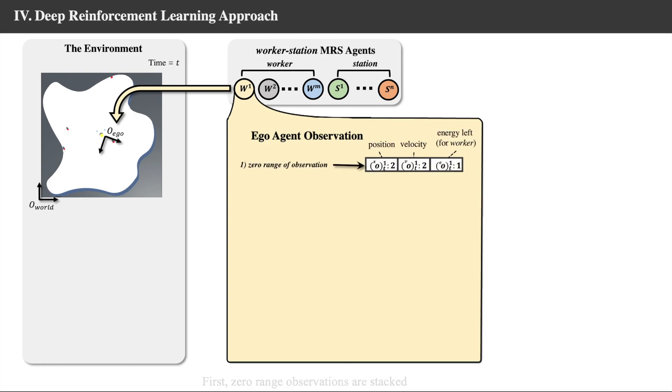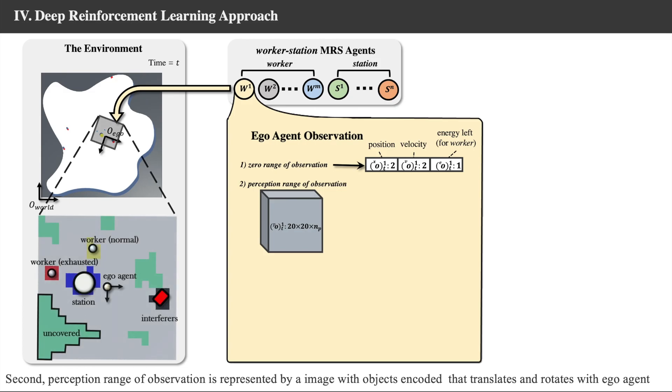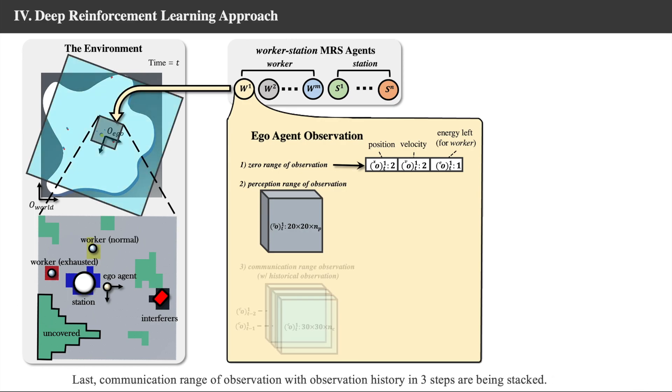Second, perception range of observation is represented by an image with objects encoded that translates and rotates with ego-agent. Last, communication range of observation with observation histories are being stacked.